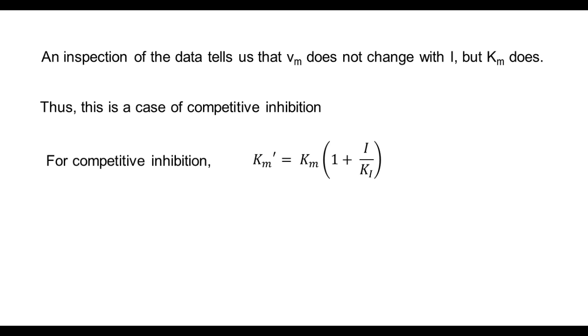So for competitive inhibition, this Km dash, the new Km, is Km times (1 plus I by Ki). And Km dash is Km by Ki times I plus Km. I have written it in a form of y equals mx plus c.